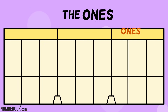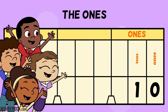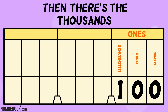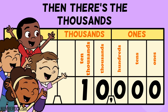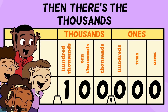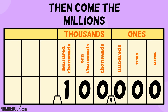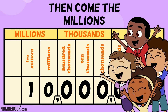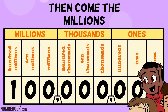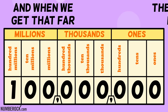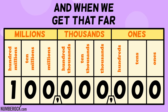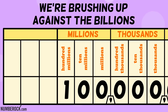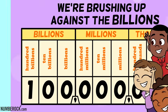The ones: ones, tens, hundreds. Then there's the thousands: one thousands, ten thousands, hundred thousands. Then come the millions: one millions, ten millions, hundred millions. And when we get that far, we're brushing up against the billions.